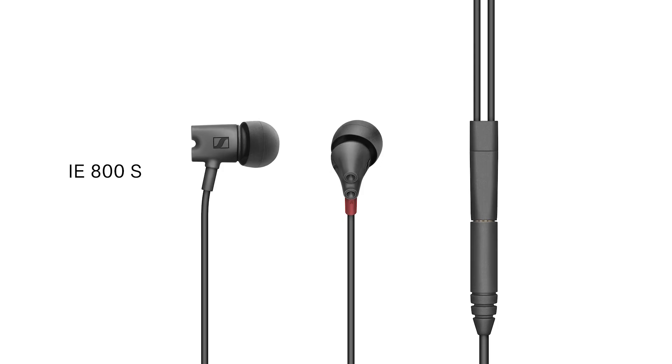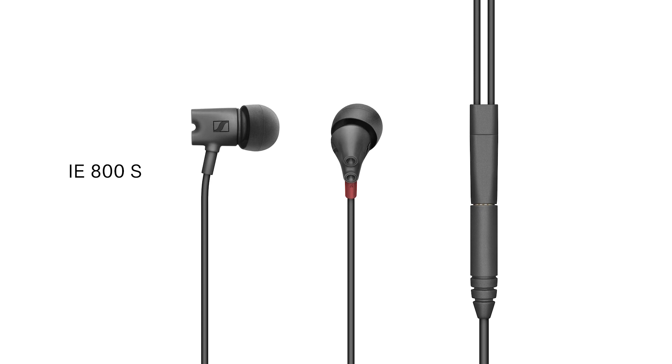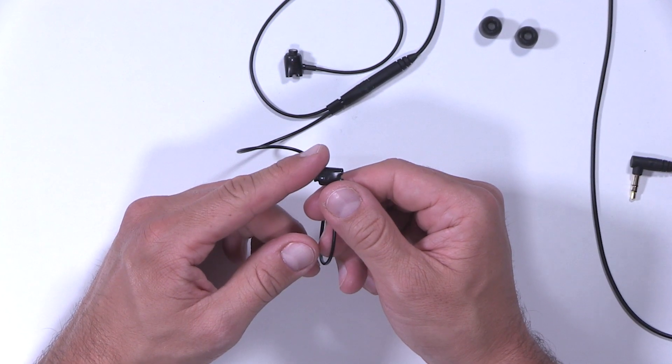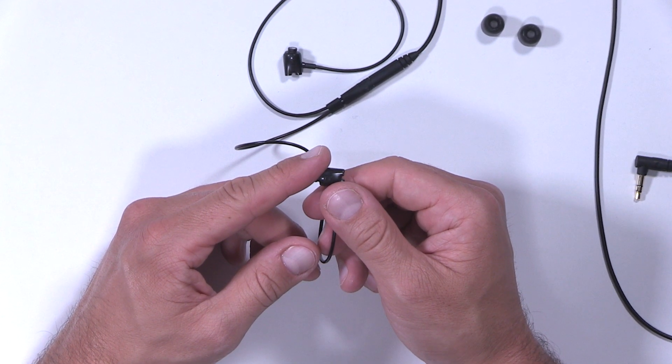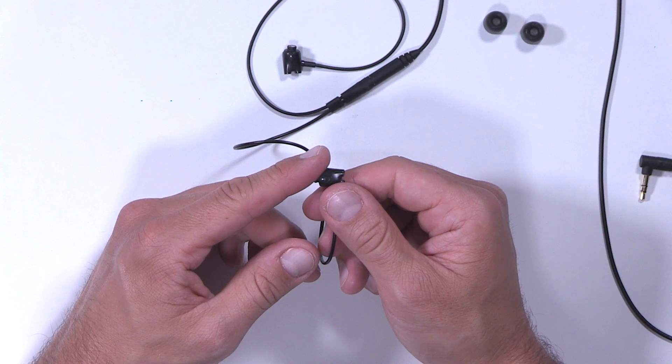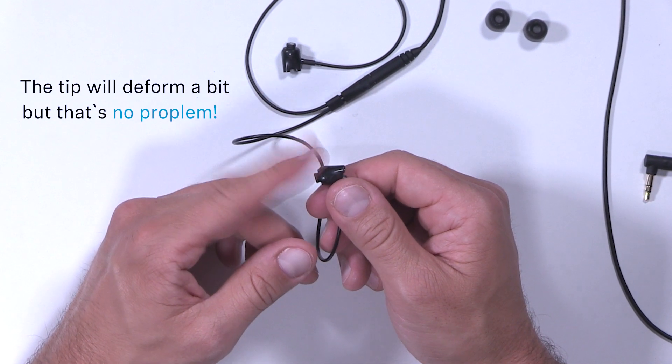For the IE800S, it's the same thing. But here the tube is very short and thus doesn't provide stabilization for the tip when you put it on. And so it will deform quite a bit, but that's no problem.